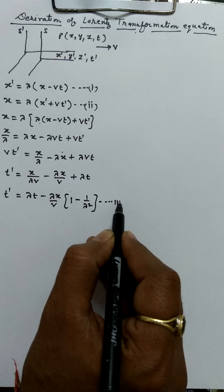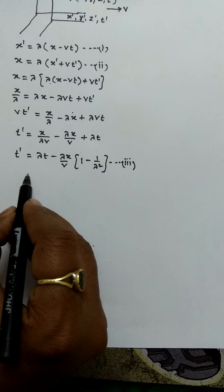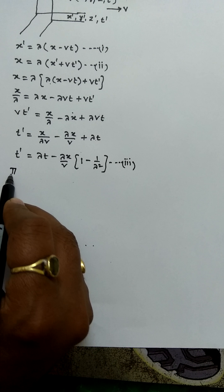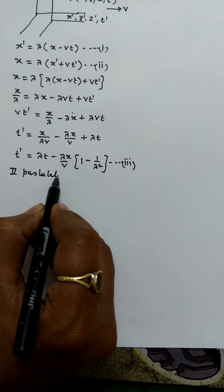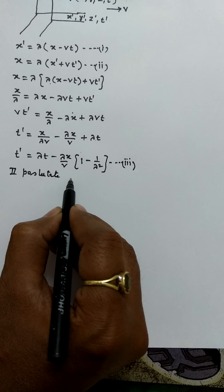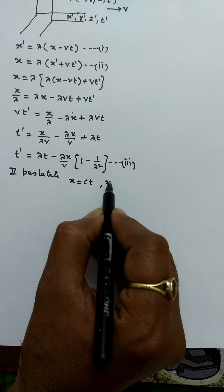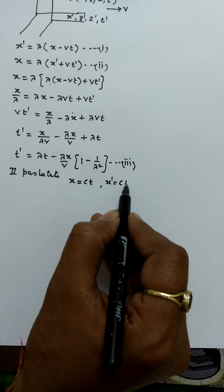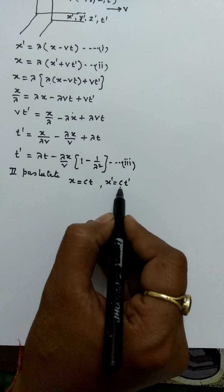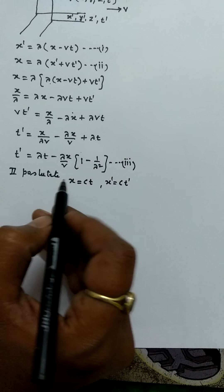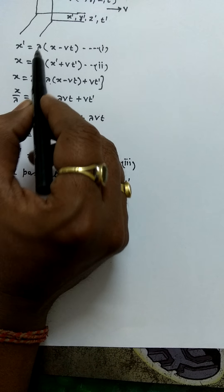Now we apply Einstein's second postulate. According to it, x should be equal to c times t, and x dash should be equal to c times t dash, where c is the velocity of light, which is always the same in all frames. Now put the values of x and x dash into equations 1 and 2.